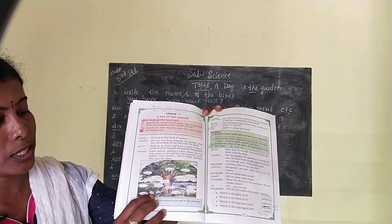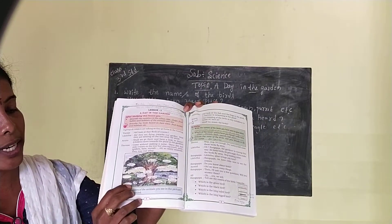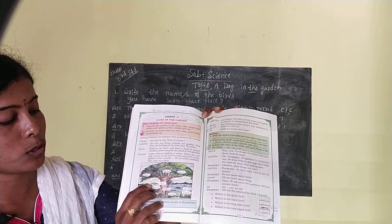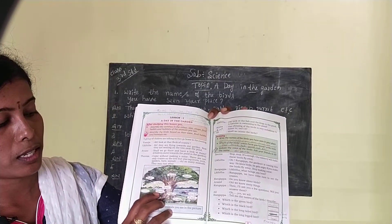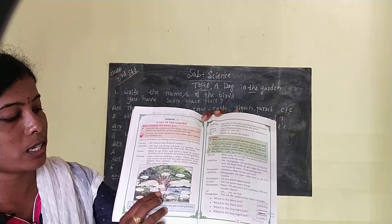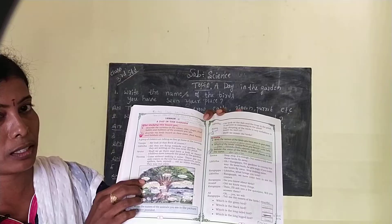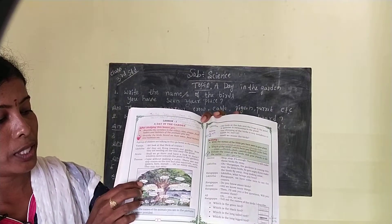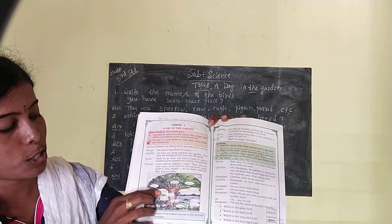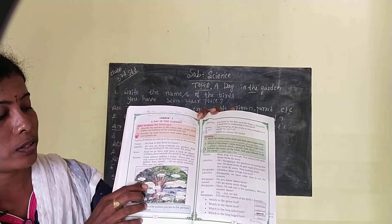Which animals are these? Rabbits — write down R-A-B-B-I-T-S, rabbits. Next, there are two birds here — they are cranes, C-R-A-N-E-S. And one more bird is there — that is bat, B-A-T. And here, spider — S-P-I-D-E-R, you have to write spider.